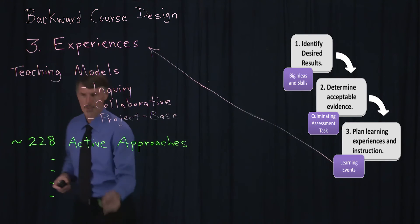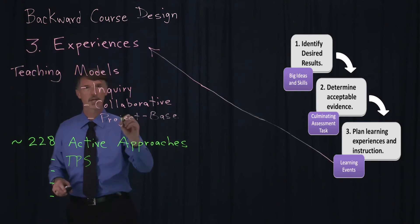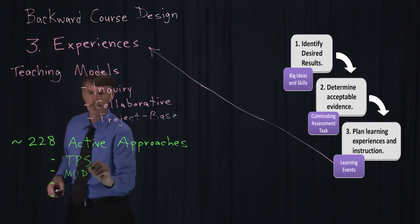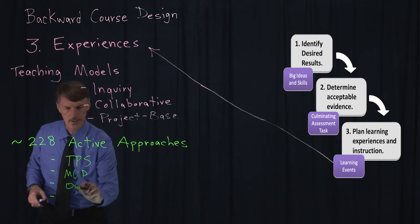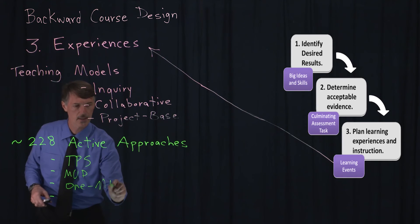These might include, you might have seen some of these. The popular ones that are used a lot are think pair shares, something called a muddiest point. Also, we do one-minute papers. These are these reflective papers at the end of a concept.